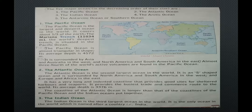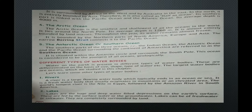The Indian Ocean is the third largest ocean in the world. It is the only ocean named after a country — India. It is surrounded by Africa in the west and Australia in the east. In the north, it is entirely bounded by Asia; therefore, it is also called half an ocean. Its southern part is linked with the Pacific Ocean and the Atlantic Ocean.